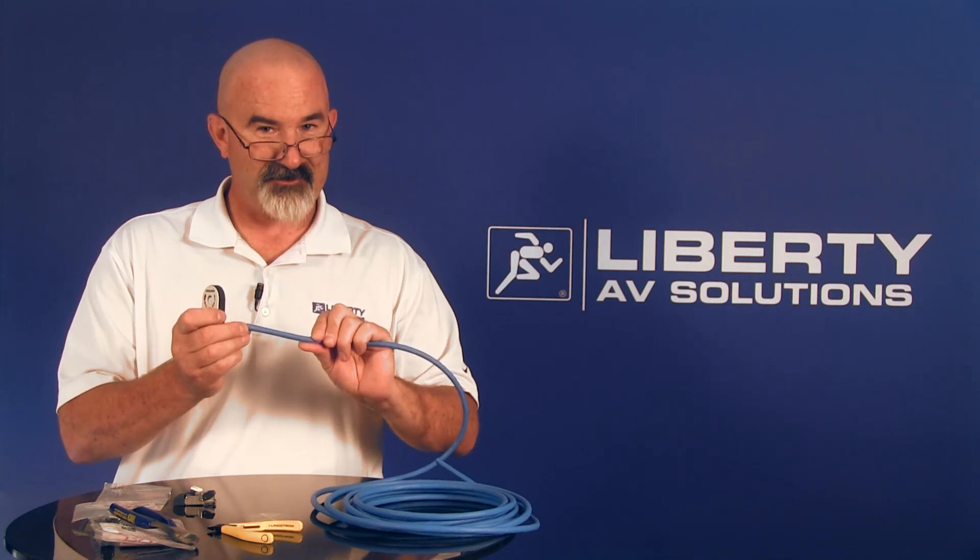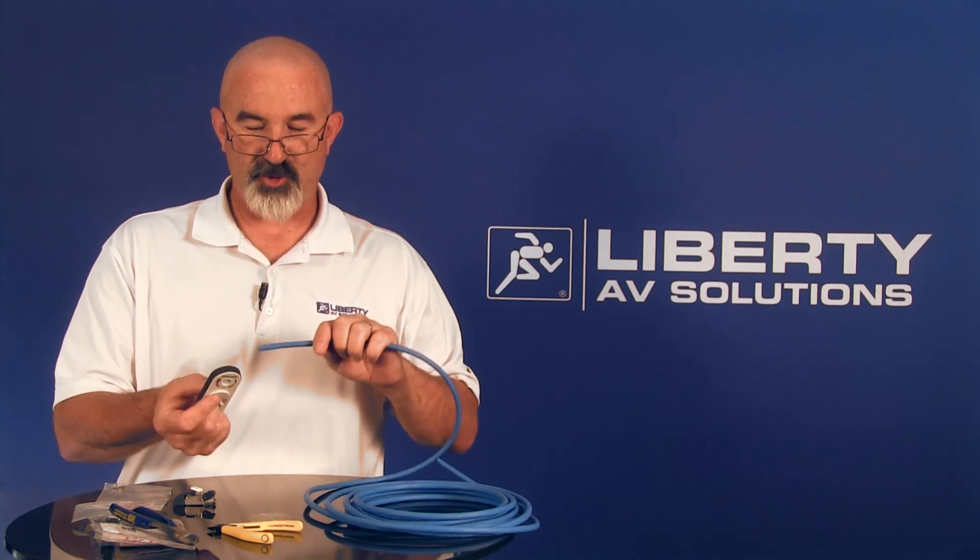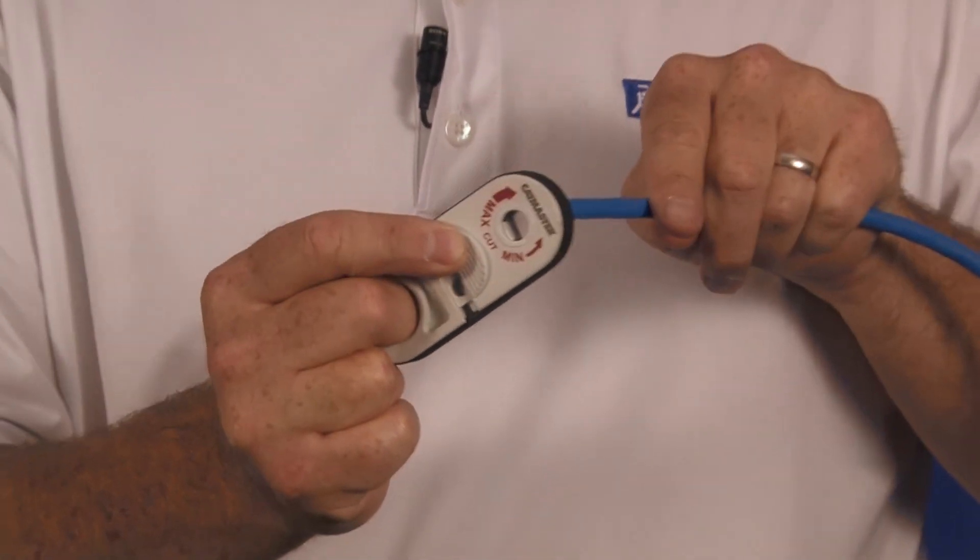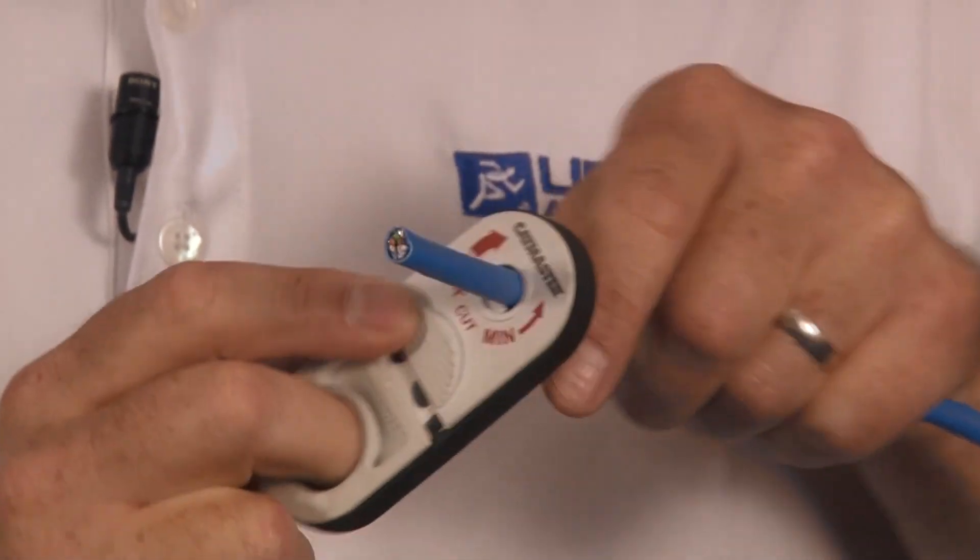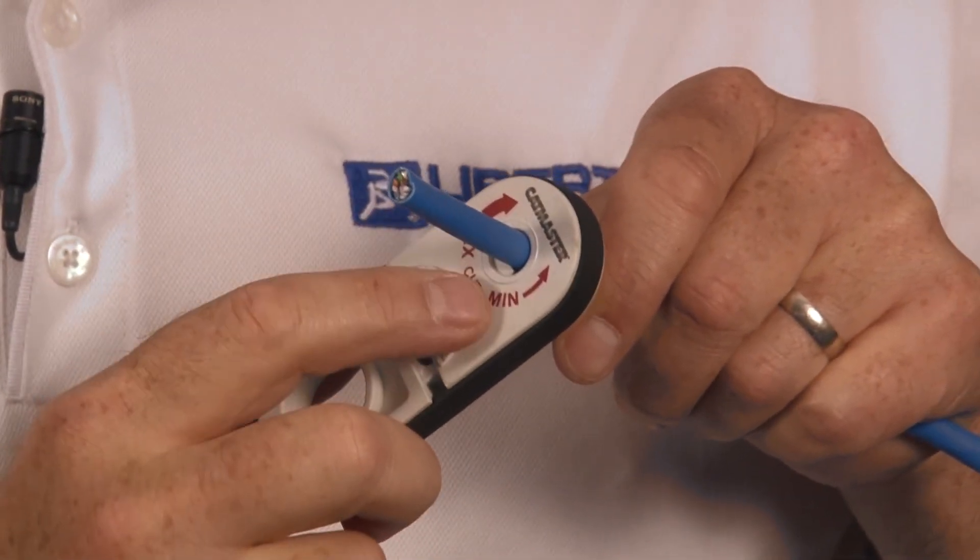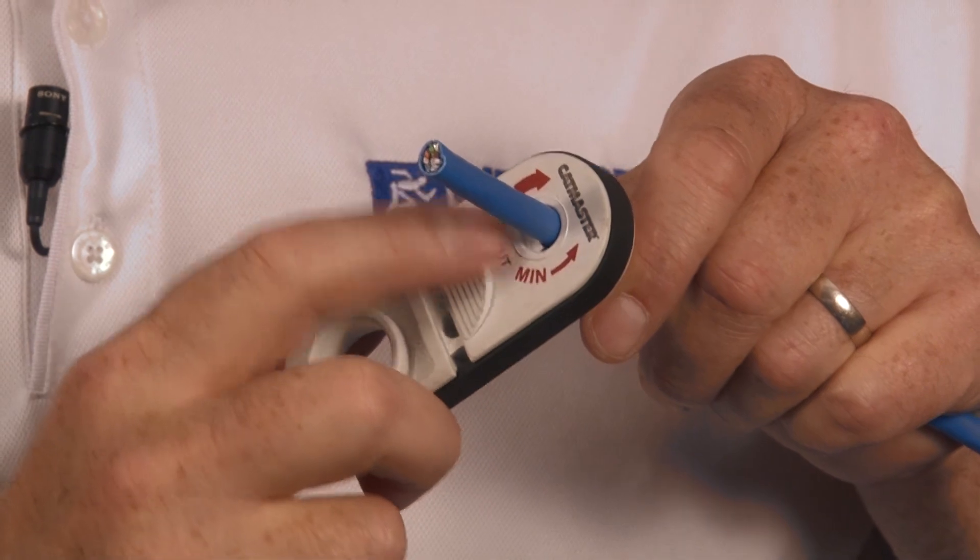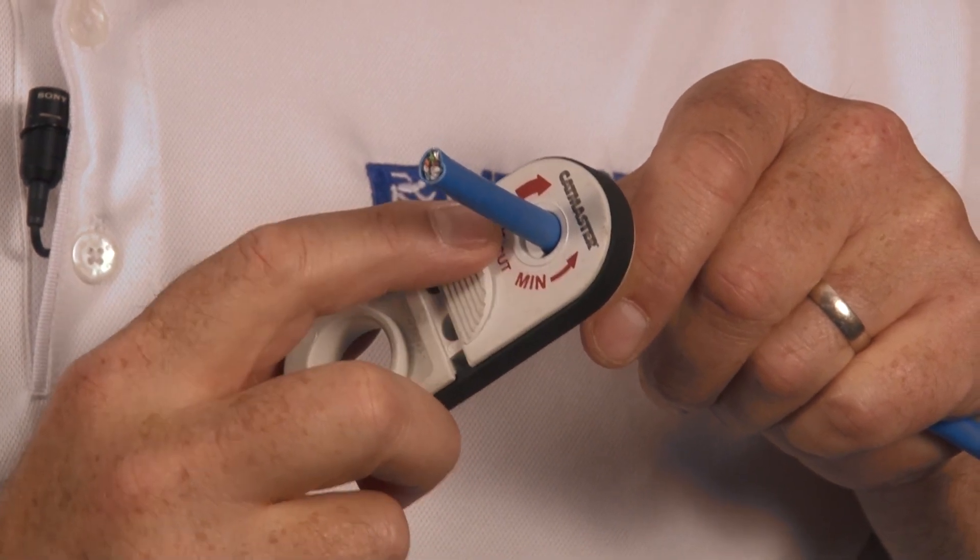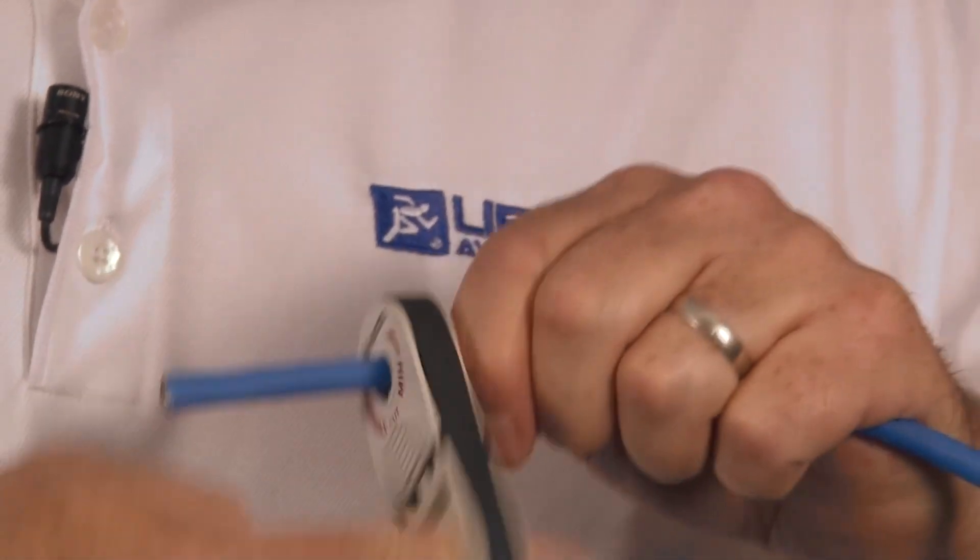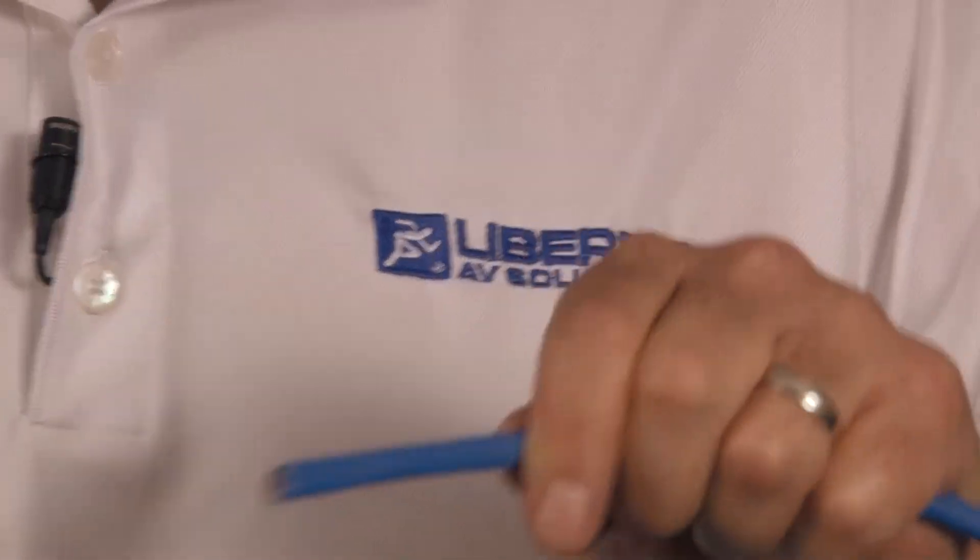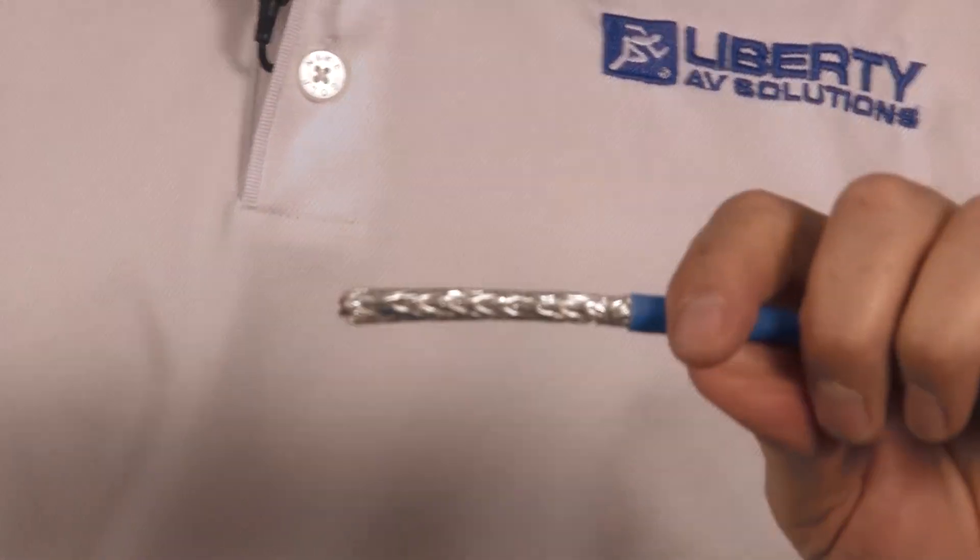So this is a Category 7 cable. I'm going to go ahead and use a strip tool, a cigar cutter type. I'm going to do about a two-inch strip. It's got a max and a min on the direction. I always want to do minimum when I'm doing shielded cables. I'll do a spin around, pop the jacket, pull it off.